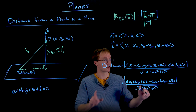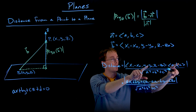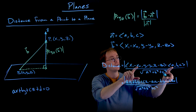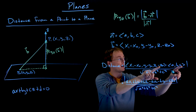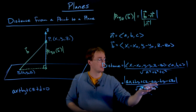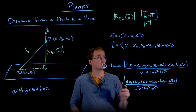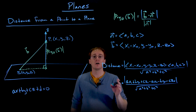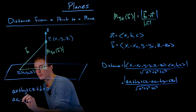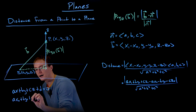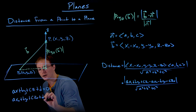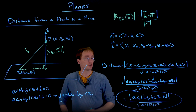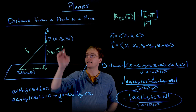I got ax1 plus by1 plus cz1 in the numerator, and then I've collected the other terms: negative ax0, negative by0, and negative cz0. The reason I collected those other terms off to the side is because what do we know about the point X0, Y0, Z0? We know X0, Y0, and Z0 are in our plane, so that means they satisfy the equation for our plane: ax0 plus by0 plus cz0 plus d is equal to zero.